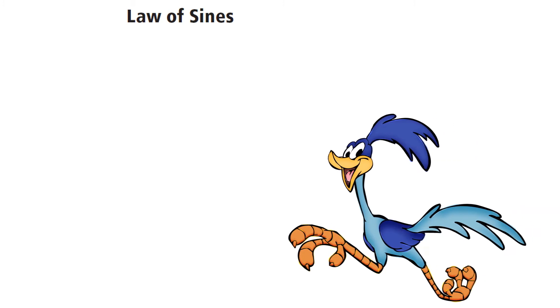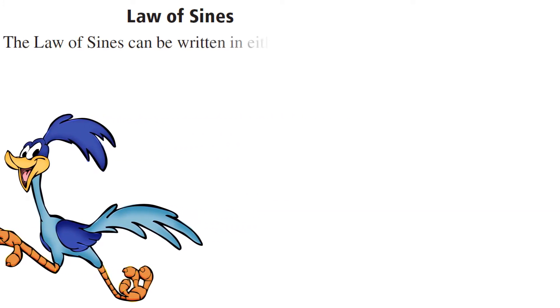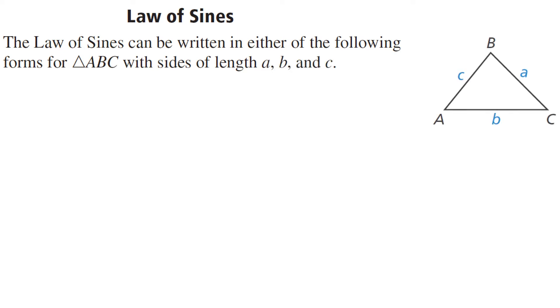Okay, so for the law of sines, we can set up law of sines in one method of two ways. We'll be using proportions. Now notice when you see the diagram that we don't have a right triangle. It's still a triangle. I can still label the corners A, B, and C, but C is not a right angle.